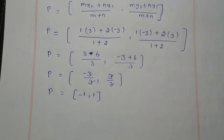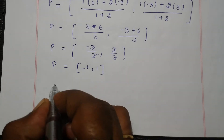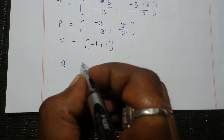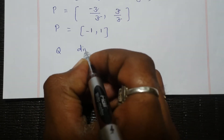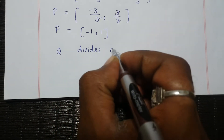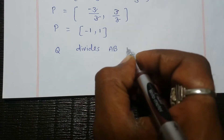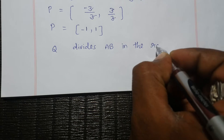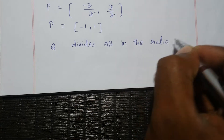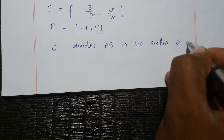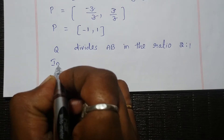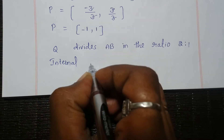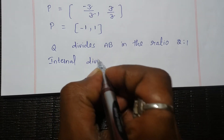Similarly, Q divides AB in the ratio 2:1. So the internal division point formula is applied again with m:n = 2:1.